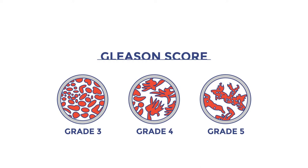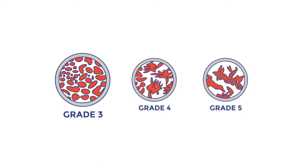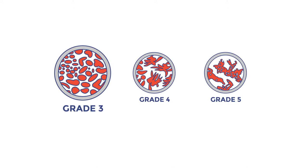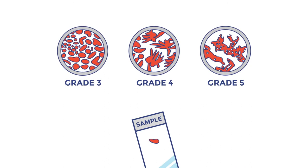Today the Gleason score is measured on a scale from 3 to 5. The cells in Gleason grade 3 are very similar to normal healthy cells, while the cells in grade 5 are very abnormal looking.